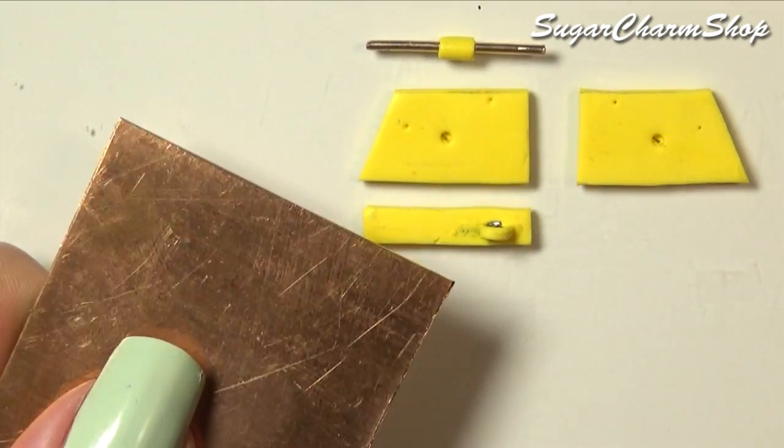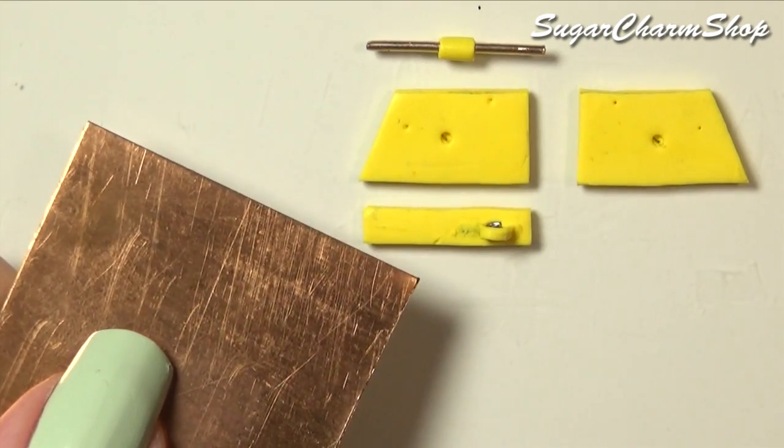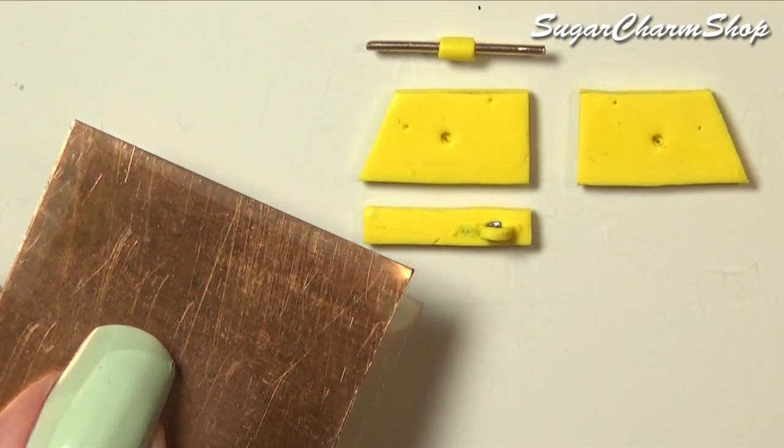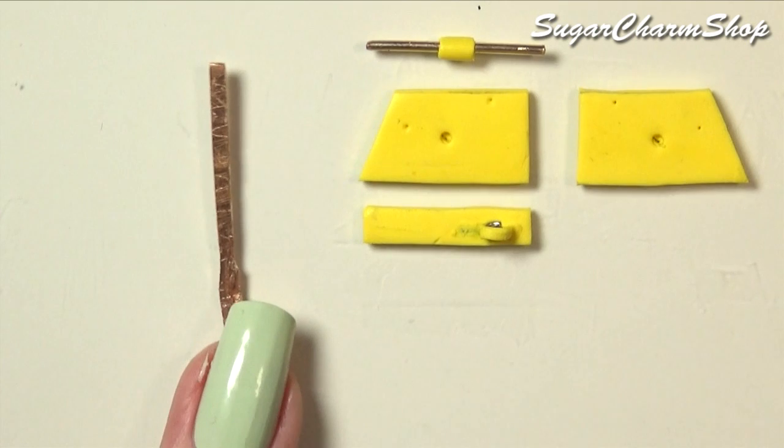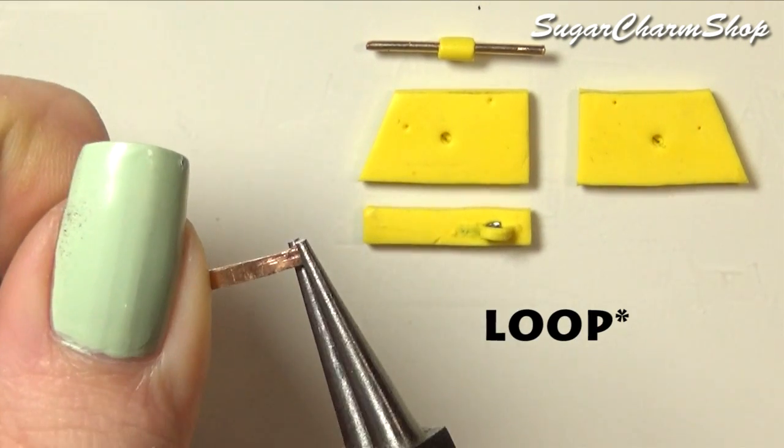Next you want to take a sheet of metal, I'm using copper, but you can also use the thick metal from a can of food, cut a strip, and then make a hole at one end.